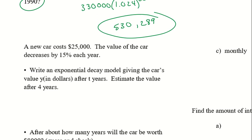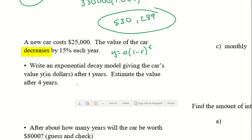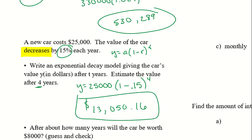Let's look at a decay model. A new car costs $25,000. The value of the car decreases by 15% each year — decreases is a good indication we're using the decay model. So y equals a times 1 minus r to the power of t. Write an exponential decay model giving the car's value y in dollars after t years, then estimate the value after 4 years. We have y equals 25,000 times 1 minus 0.15 to the power of t. Plugging in 4 for t gives us about $13,050.16. So after 4 years of owning this car, that is how much it would be worth.